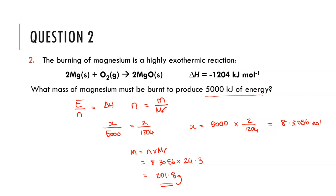We can set up a basic ratio: for 2 moles we produce 1,204 kilojoules. If we want 5,000 kilojoules, we need x moles. Cross-multiplying gives x = (5,000 × 2) / 1,204, which gives the number of moles that would produce 5,000 kilojoules. Now with the number of moles, we can work out the mass of magnesium: 8.3056 mol × 24.3 g/mol = 201.8 grams, which rounds to 202 grams of magnesium to three significant figures.